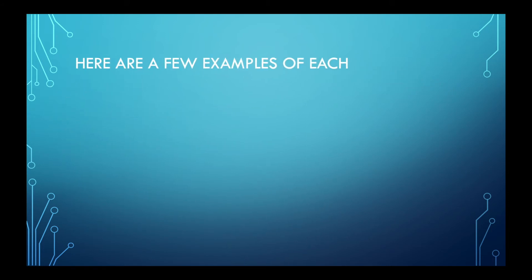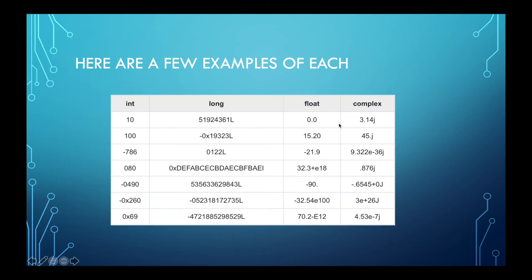So here are a few examples of each that we just learned right now. So here we have integers, you can see positive 10, positive 100. If you don't see a plus sign, that means it's positive. Well, if you see a negative sign, then it's negative. So we have minus 786, positive 080, or positive 80, negative 0490, and so on. You can even add a letter like x over here.